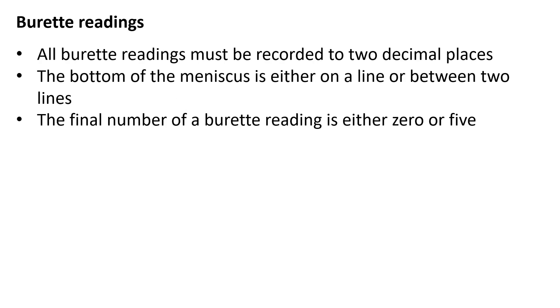All burette readings must be recorded to two decimal places. The bottom of the meniscus is either on a line or between two lines. The final number of a burette reading is either 0 or 5.